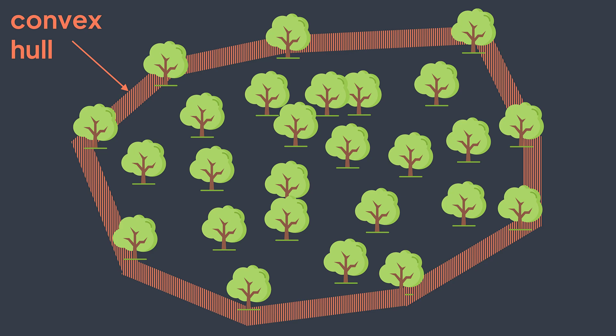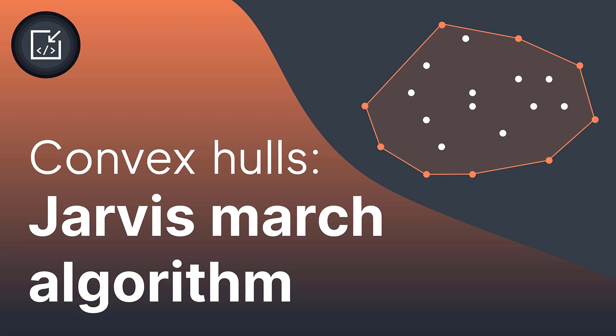Given the positions of our elements, we have different algorithms to find the convex hull. Today we will see one of them: the Jarvis March algorithm, also called the gift wrapping algorithm.